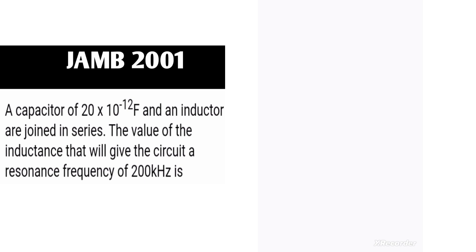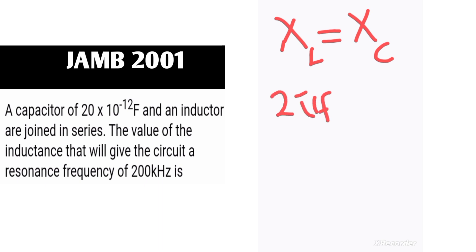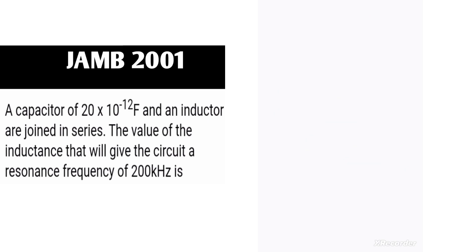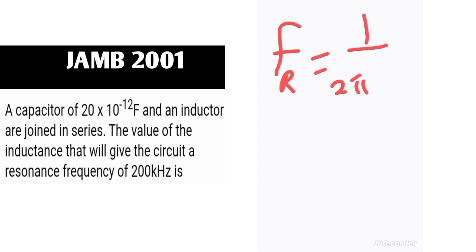Remember that at resonance, the capacitive reactance equals the inductive reactance. The inductive reactance is 2πfL and the capacitive reactance is 1/(2πfC). Solving this equation and making the resonant frequency the subject gives f_r = 1 / (2π√(LC)). Making L the subject of the formula, we get L = 1 / (4π²f²C).